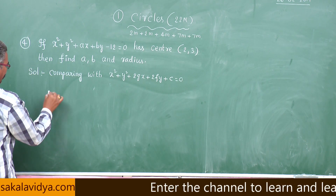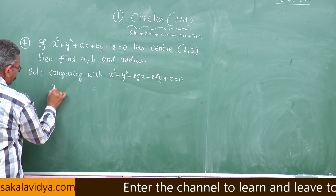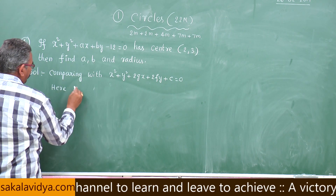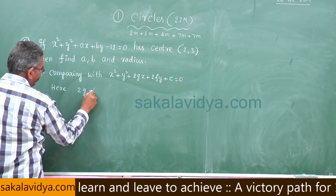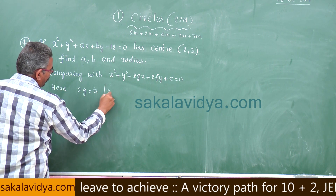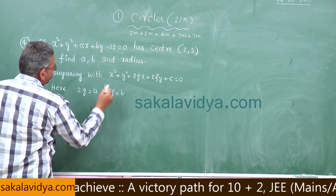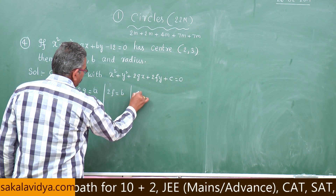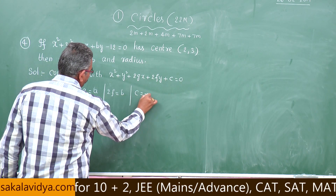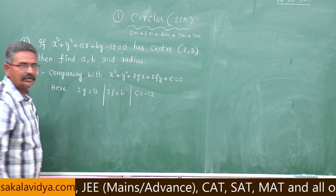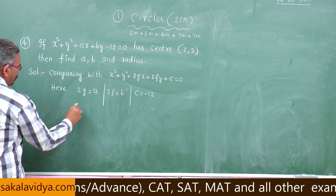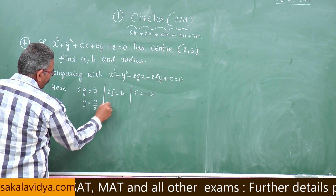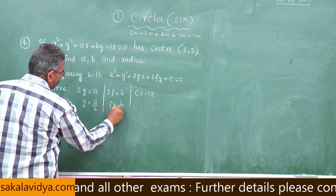Now here 2g stands for a, 2f stands for b. Am I correct? Whereas c stands for minus 12. Now g is equal to a by 2, f is equal to b by 2.